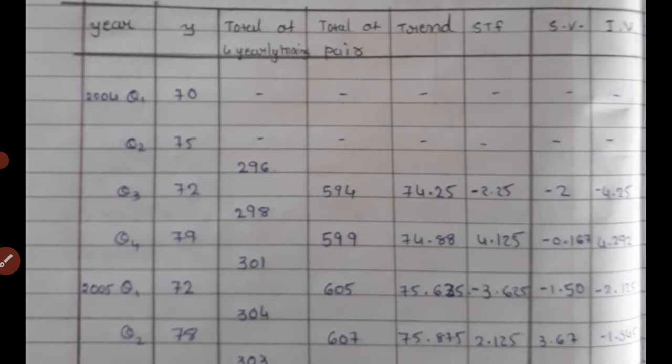You divide the total of pairs. For 3 years, divide by 3; for 5 years, divide by 5; and for 4-yearly, divide by 8. So you have to find the trend. In the original question, you change the trend column. When you change the column, you make two different columns.